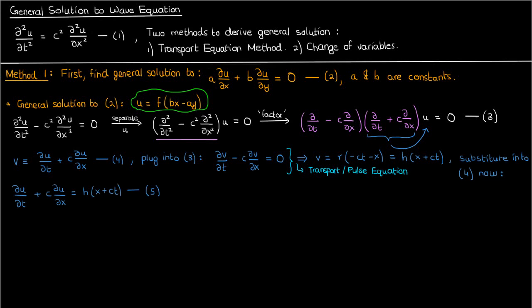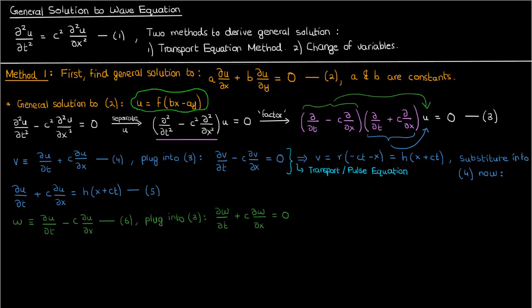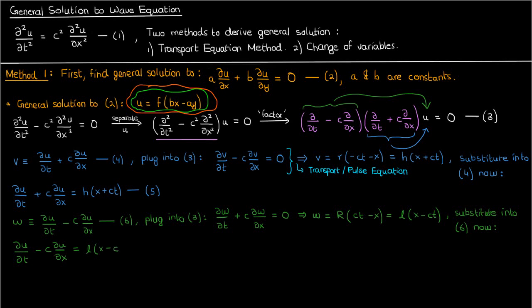Going back to equation 3, instead of expanding the first operator factor, I'll now expand the second operator factor on u and call that result w. Plugging w back into equation 3, we get: dw/dt plus c times dw/dx equals 0. This is also a transport equation, except the transport is now happening in the other direction. The general solution is w equals capital R of ct minus x, which is just some function l of x minus ct — again absorbing the negative one since it's just a constant.